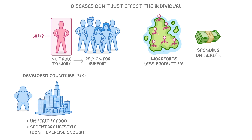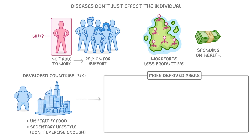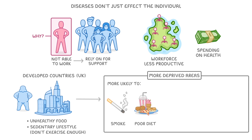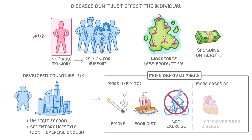Meanwhile, on a national scale within the UK, people from more deprived areas are more likely to smoke, have a poor diet, and not exercise enough. So we see more cases of cardiovascular disease and obesity in those deprived areas.